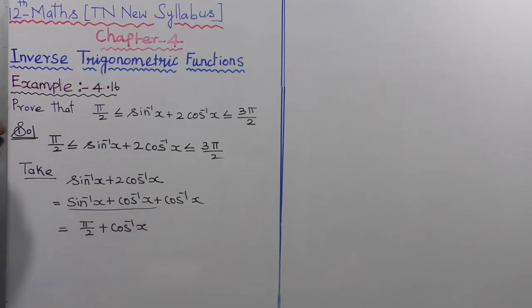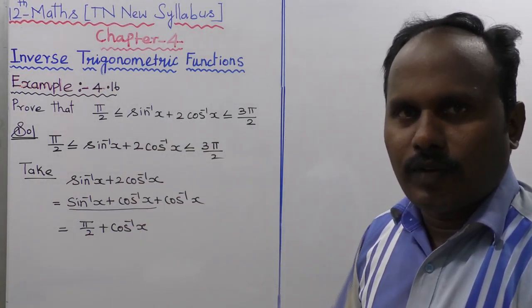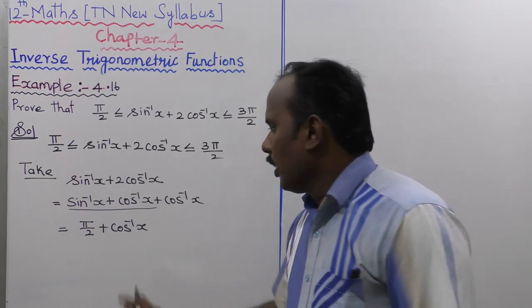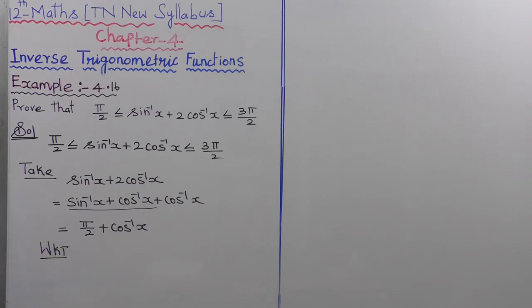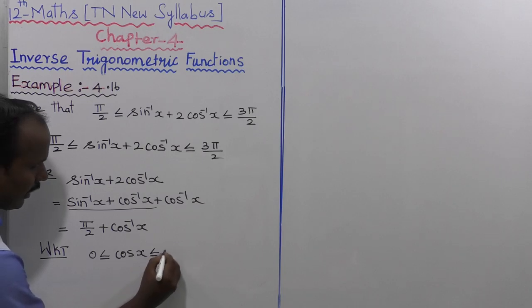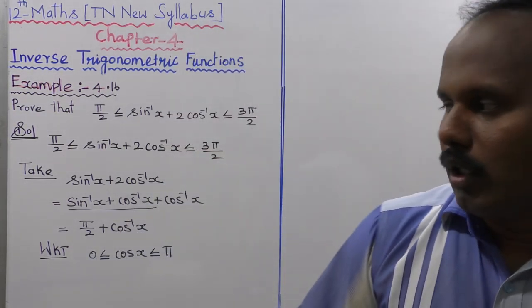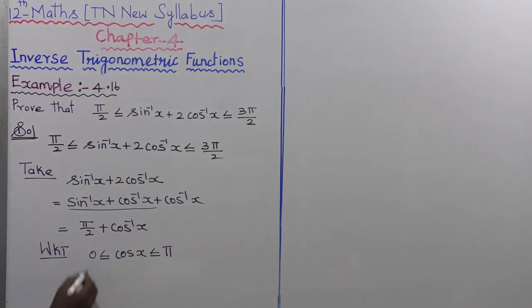The function is sin⁻¹(x) + 2·cos⁻¹(x). Since the principal value of sin⁻¹(x) differs from that of cos⁻¹(x), we convert the expression to contain only cos⁻¹(x). The result is π/2 + cos⁻¹(x). We know that the principal value of cos⁻¹(x) satisfies 0 ≤ cos⁻¹(x) ≤ π.